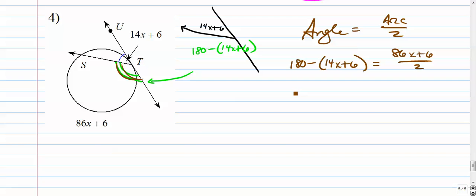Distribute this on the left first. 180 minus 14x minus 6 is equal to 86x plus 6 over 2. Simplify, 174 minus 14x, 86x plus 6 over 2. So right here, since both of these numerators are divisible by 2, you can simplify that. But sometimes they're not going to be.